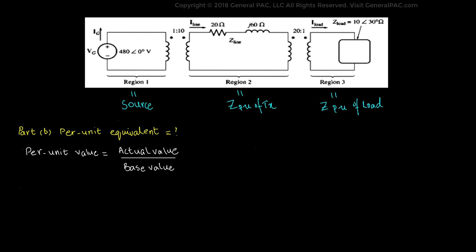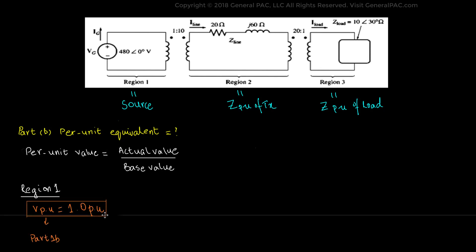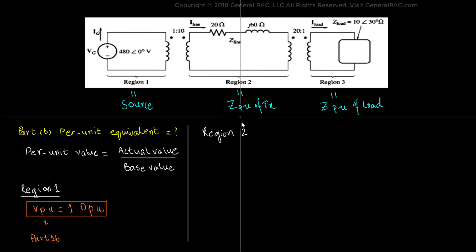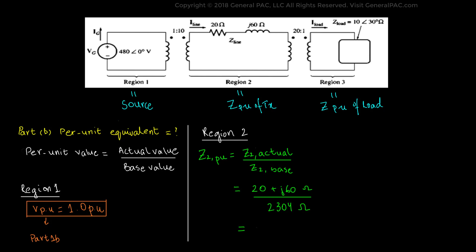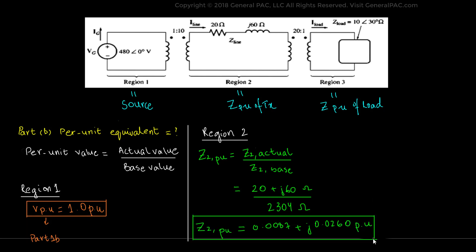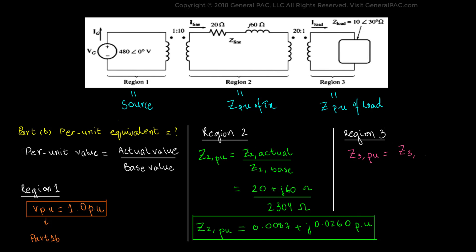For Region 1, we calculated the per unit voltage in Part 1B, which was given as 1 per unit. For Region 2, the per unit impedance of the transmission line is Z2(pu) equals Z2-actual divided by Z2-base. Z2-actual equals 20 + j60 ohms and Z2-base equals 2304 ohms, giving 0.0087 + j0.0260 per unit. For Region 3, Z3(pu) equals Z3-actual divided by Z3-base. Z3-actual equals 10 ohms at 30 degrees and Z3-base equals 5.76 ohms, giving 1.736 at 30 degrees per unit.